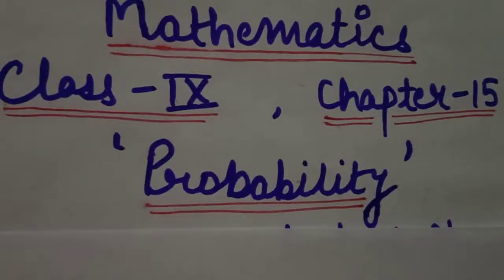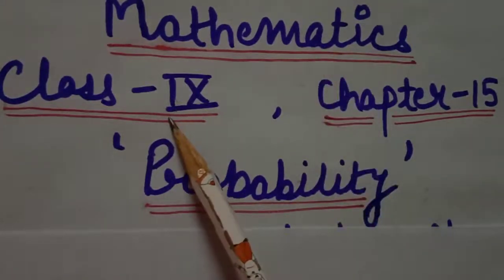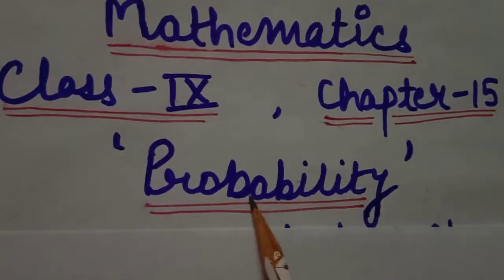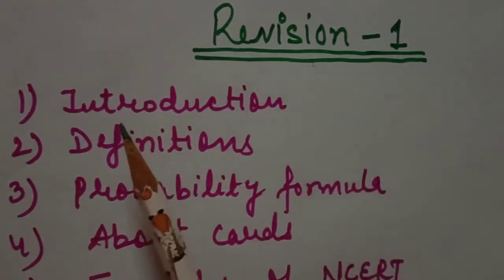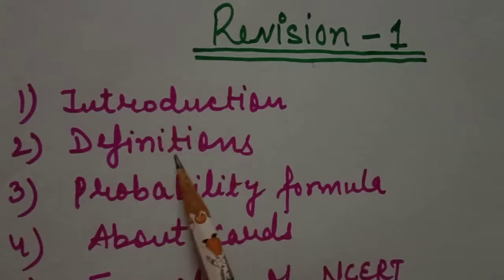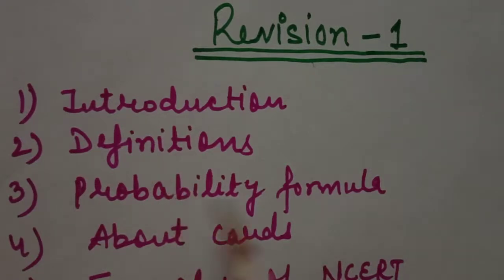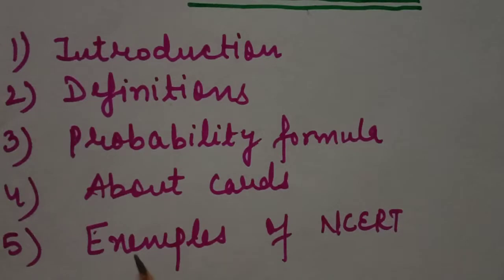Welcome back to your mathematics class for Class 9, Chapter 15 — Probability. In the last two lectures we discussed all about probability and Exercise 15.1. Today we will do a revision of the chapter. In this revision we will cover the introduction, all definitions from our previous lectures, the probability formula, all about cards, and then NCERT examples.